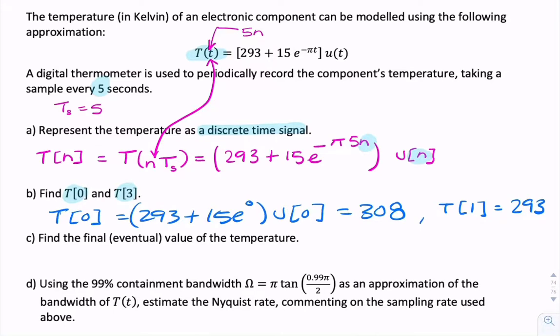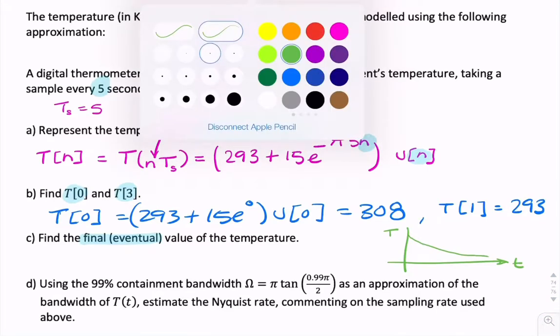Now for c, it's looking for the final, eventual value for the temperature. So in this question, what you have is you have a decay. So as t approaches infinity, the temperature, uppercase T, will decrease. And because this is now discrete, we can replace that with n.